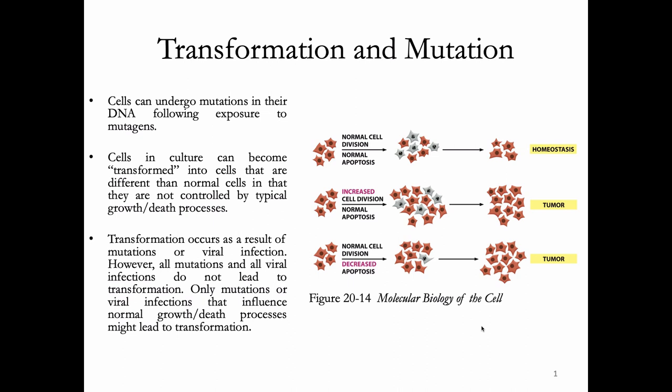One possible outcome out of many is transformation. Transformation is usually something we talk about when we talk about cells in culture, like cells in a dish we've seen in the lab. Transformation is when we have a cell in culture that is different from a normal cell — it's transformed — because it's not controlled by the normal cell growth and cell death processes. Cells are normally dividing and normally undergoing some apoptosis, so we have homeostasis in terms of cell number. If we have a mutation that increases cell division or decreases apoptosis, we can see excess numbers of cells.